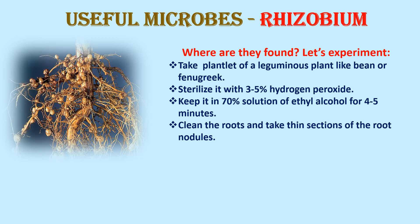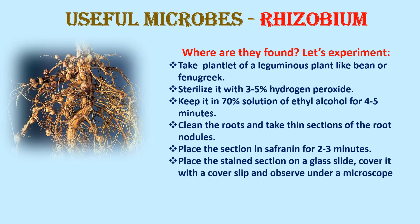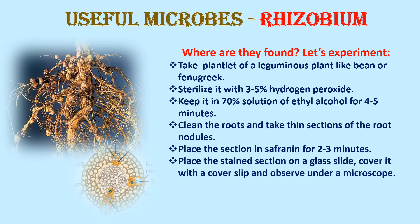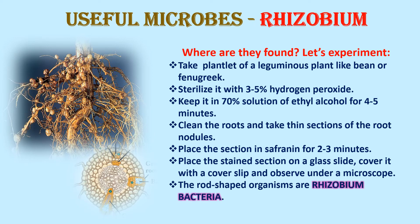With a blade, take thin slices of the root nodules. Place these sections in saffranin — a stain — for 2–3 minutes so the nodule section gets stained. Then put it on a slide, cover it with a cover slip, and observe under a compound microscope. You will see rod-shaped organisms — these are rhizobium bacteria, found in the root nodules of leguminous plants.